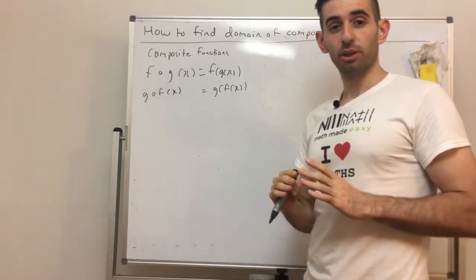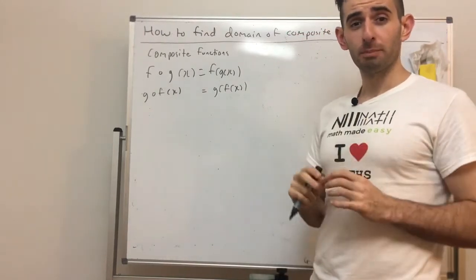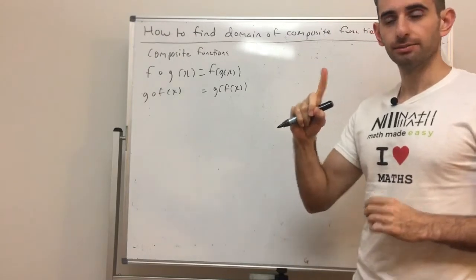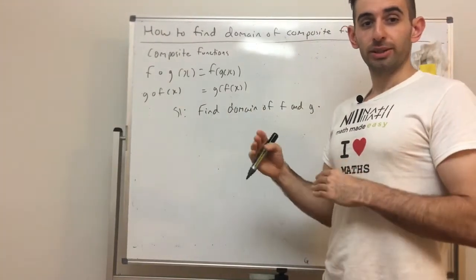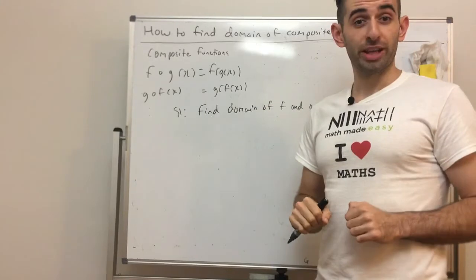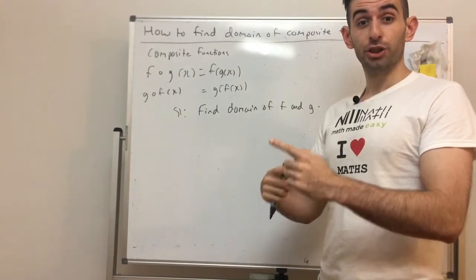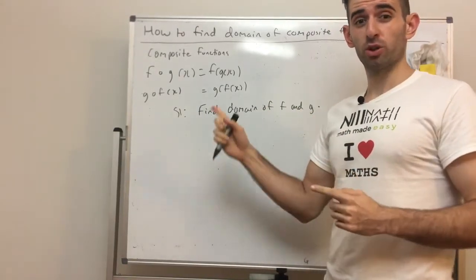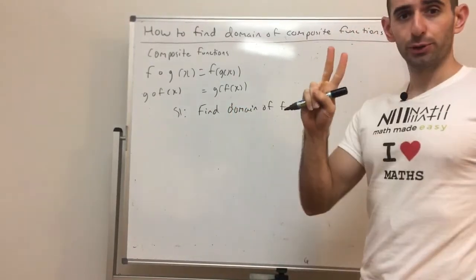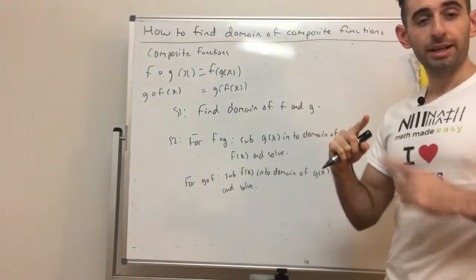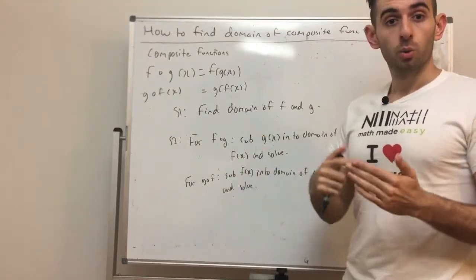Here is the three-step simple process to find the domain for composite functions. Step one: find the domain of f(g(x)). Comment below if you need a tutorial on how to find domain, because I'm going to assume you know how to find it fairly quickly — you need to in order to do these questions, otherwise it'll take forever.